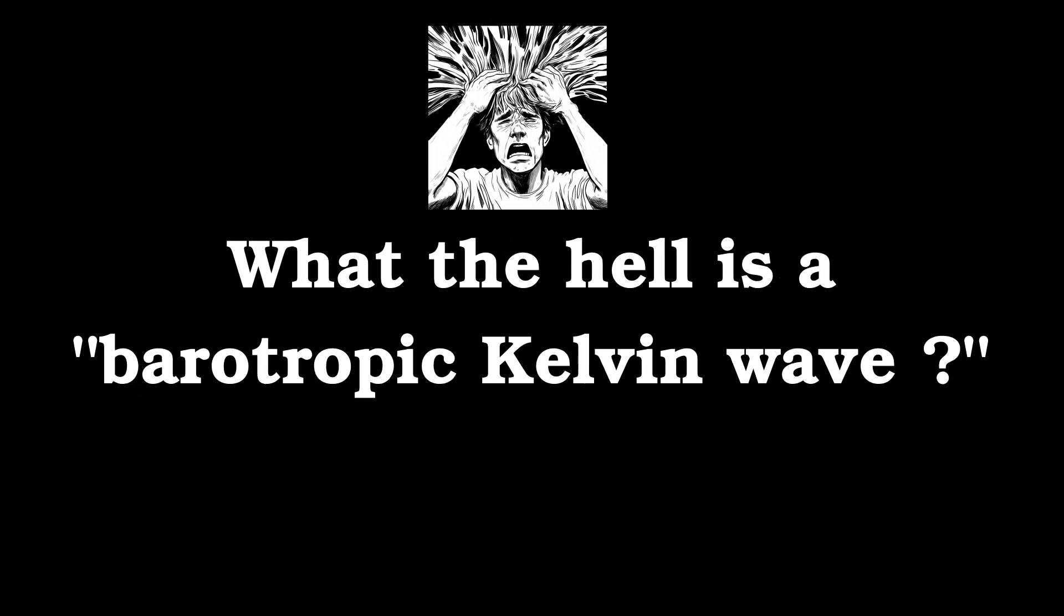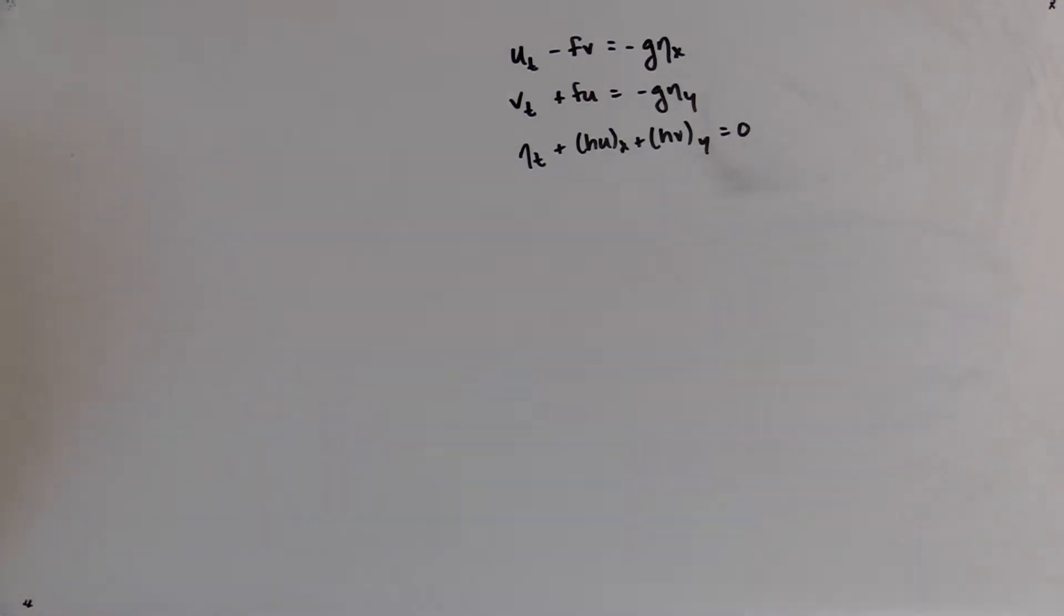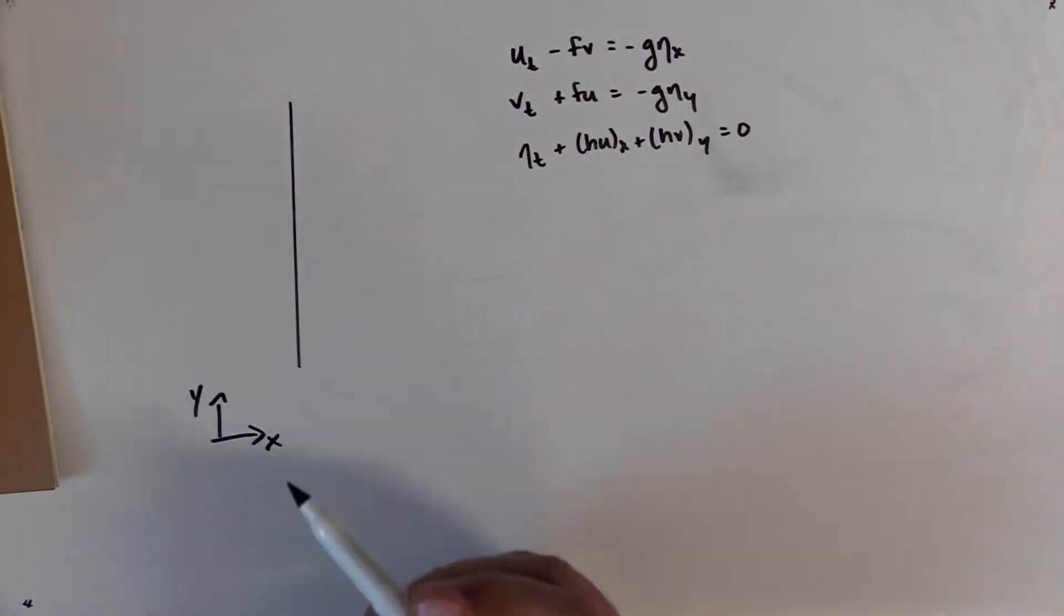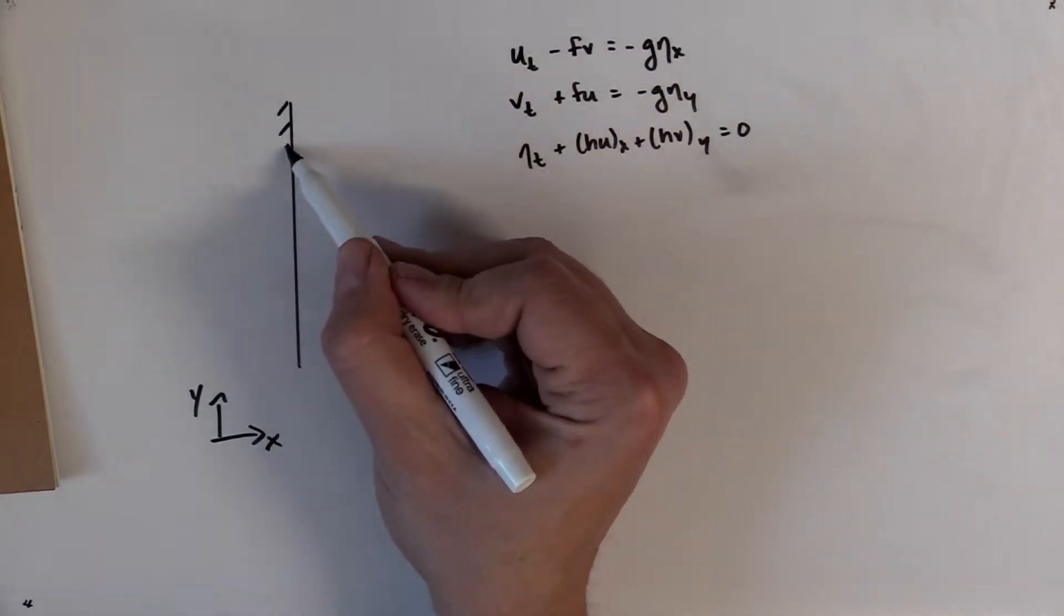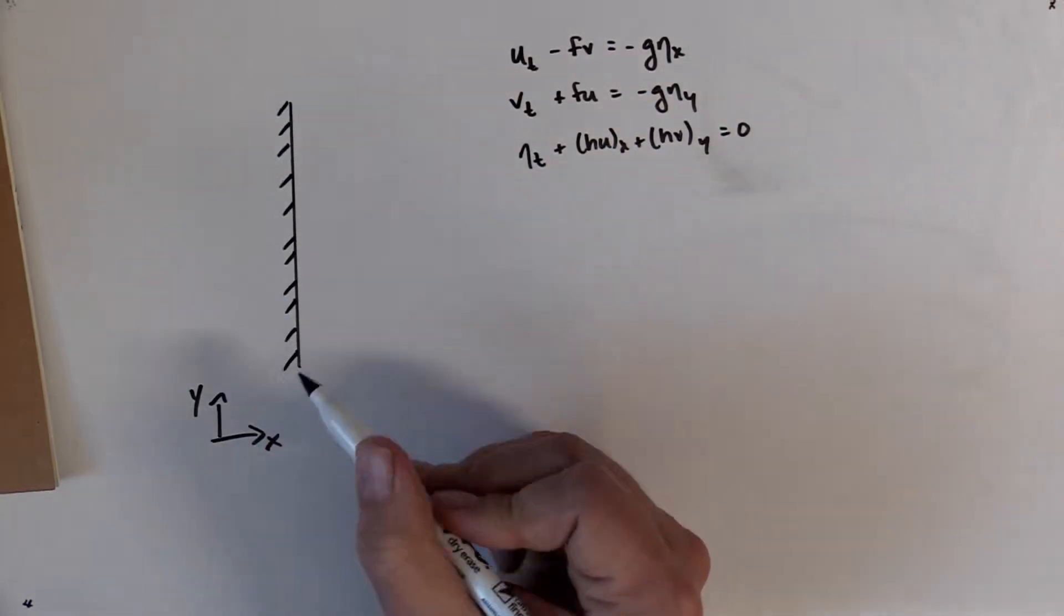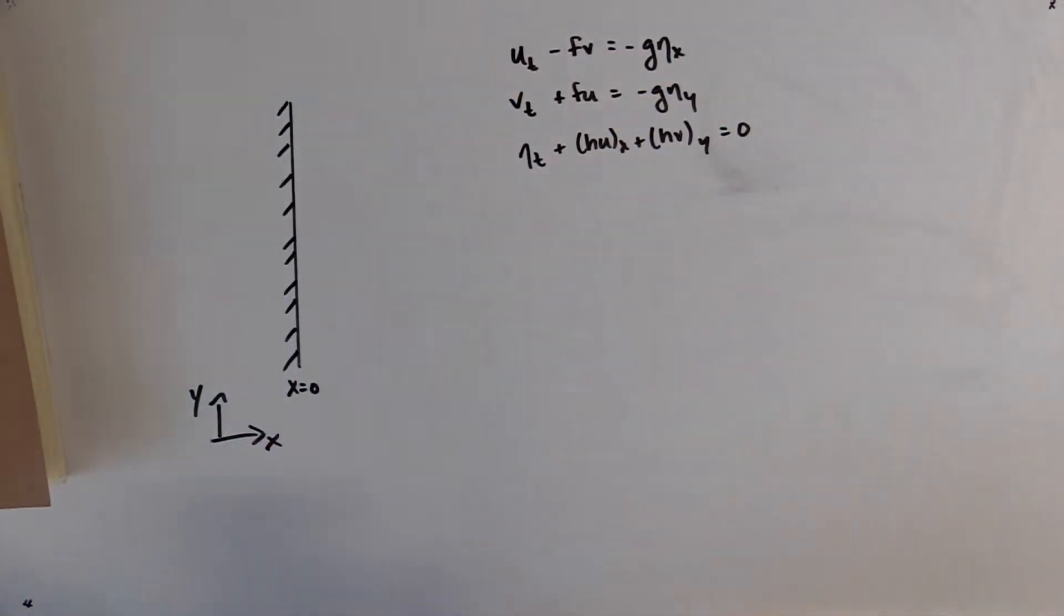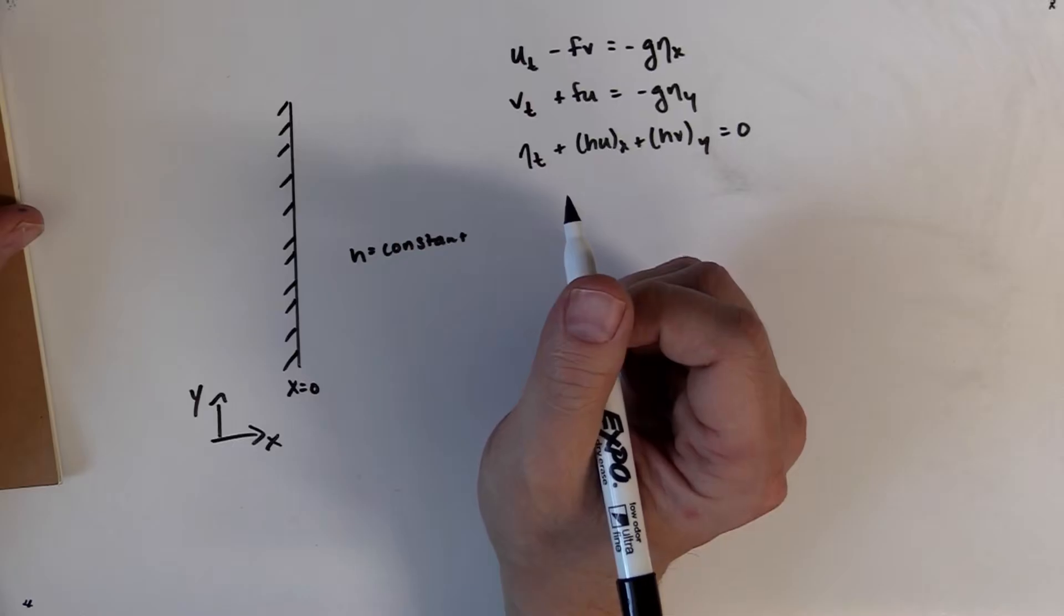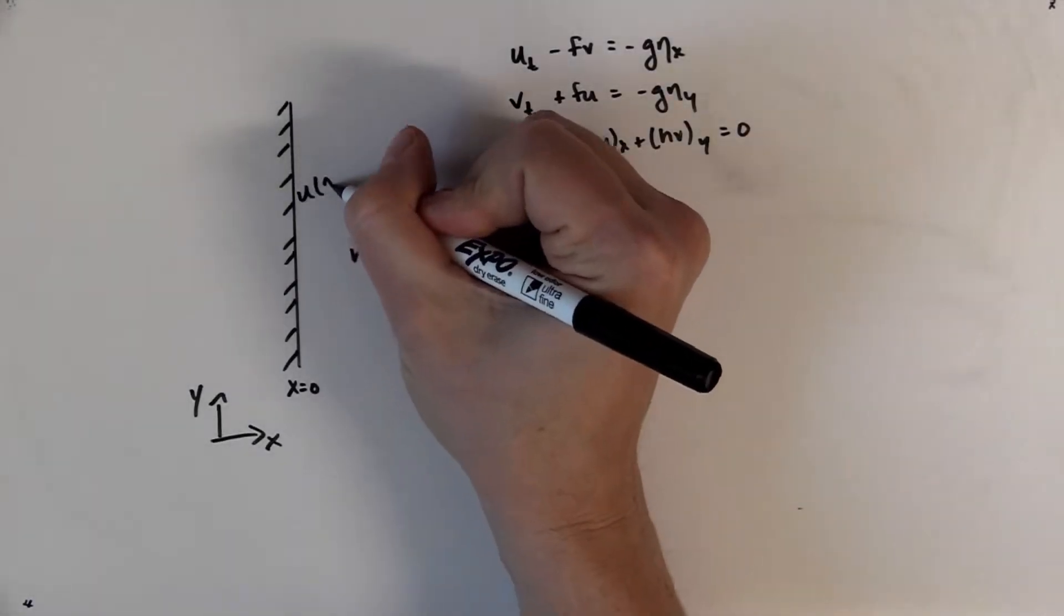In short, Kelvin waves are coastally trapped inertia gravity waves that have a preferred direction and propagation. To illustrate this, we look at plane wave solutions for the linear shallow water equations in the vicinity of a straight wall boundary where the no-normal flow boundary conditions must be satisfied. We start with a domain with a no-normal flow wall at x equals 0. In the interior of the flow, we assume that the depth is constant, and at x equals 0, we say that u equals 0 so that we satisfy the no-normal flow condition.